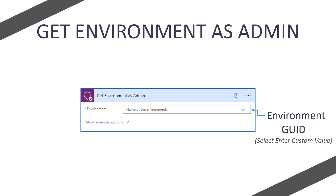You can see that there is a 'show advanced options' section, which allows you to change the API version. By default it will be set for you and I suggest you not change this unless you know exactly what you're doing with the API versions.